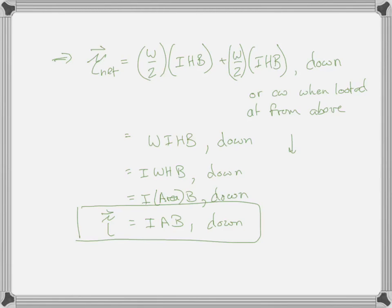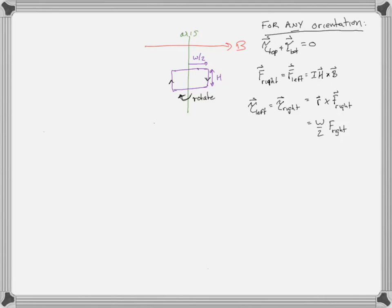Let's recap. The net torque in that orientation is IAB. The net torque at 90 degrees to that orientation is zero. No matter what the orientation of the loop is, the torque on the top plus torque on the bottom is zero — there's no net force on the top or the bottom. On the right and left, the net torque due to the force on the right and left is non-zero because they always point in the same direction.